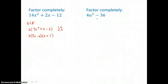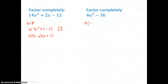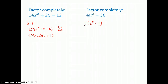Over here, we're factoring the difference of 2 perfect squares. But there's a greatest common factor of 4 in those two terms, so I'm going to factor that 4 out first. What I'm left with is U squared minus 9. I'll check: 4 times U squared is 4U squared, and 4 times negative 9 is negative 36.